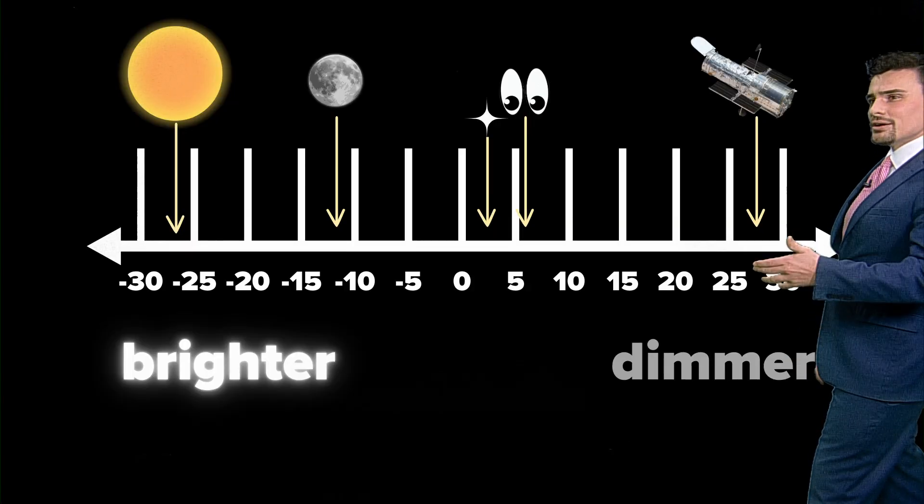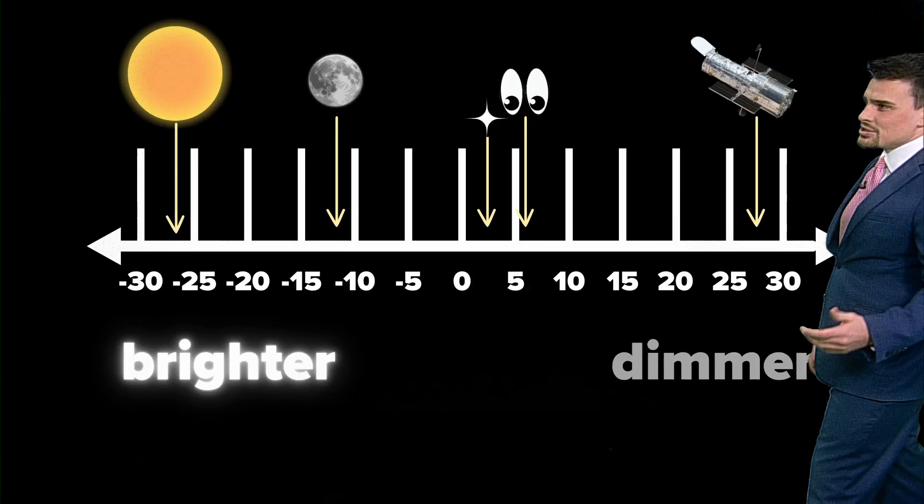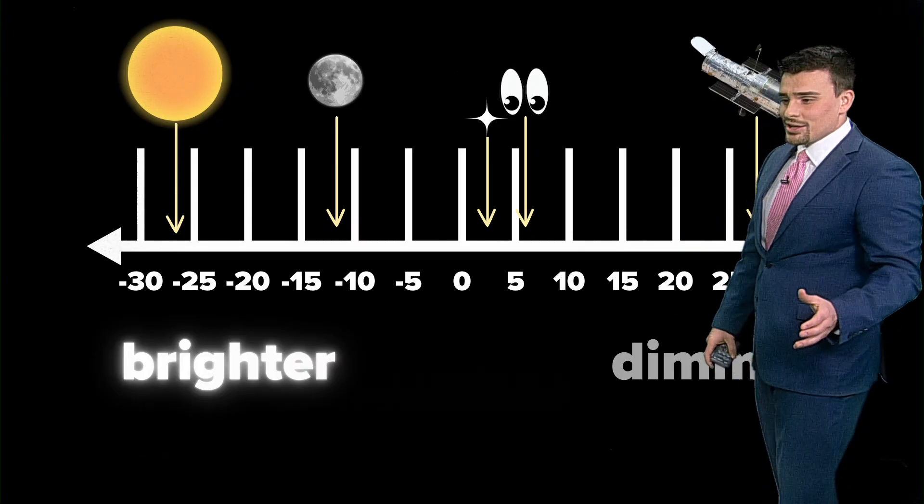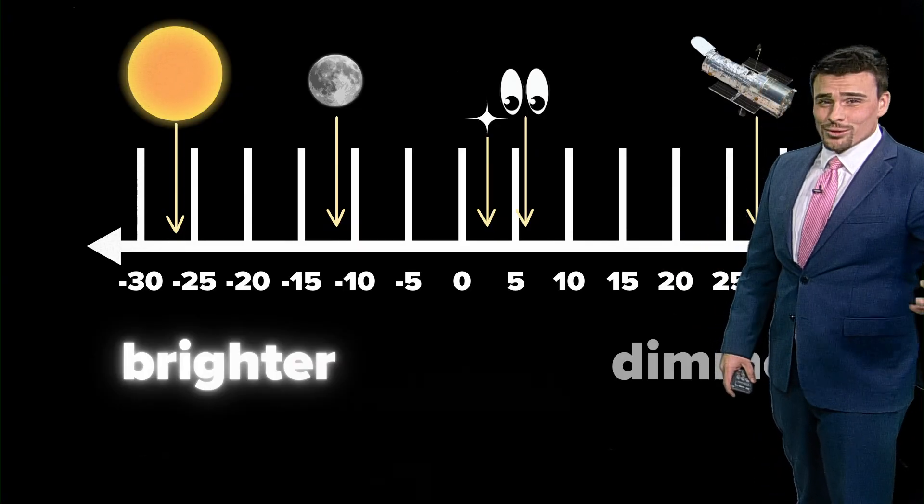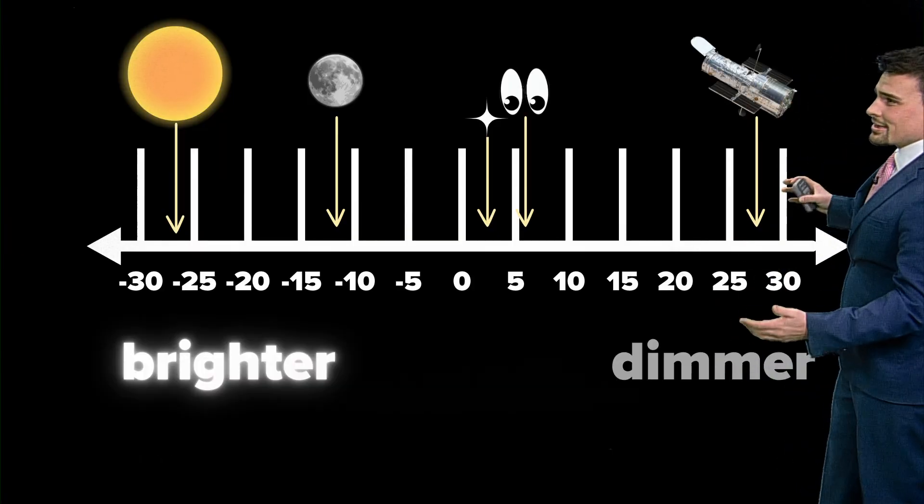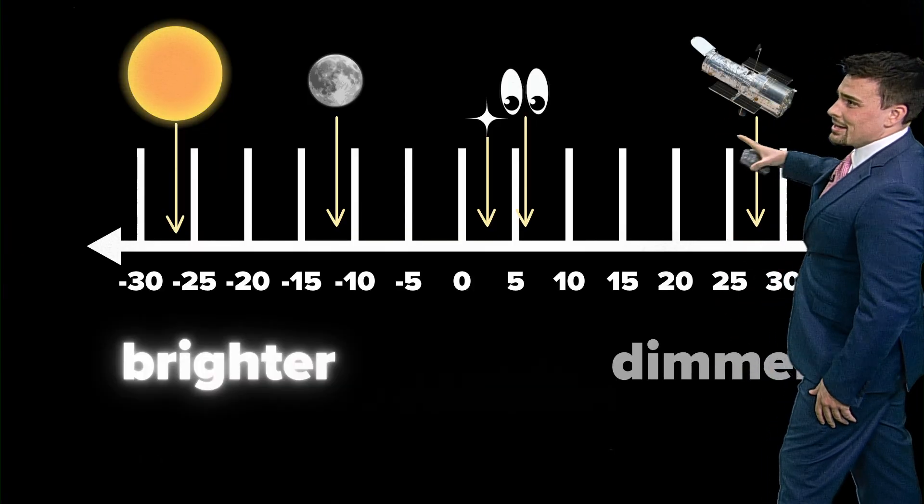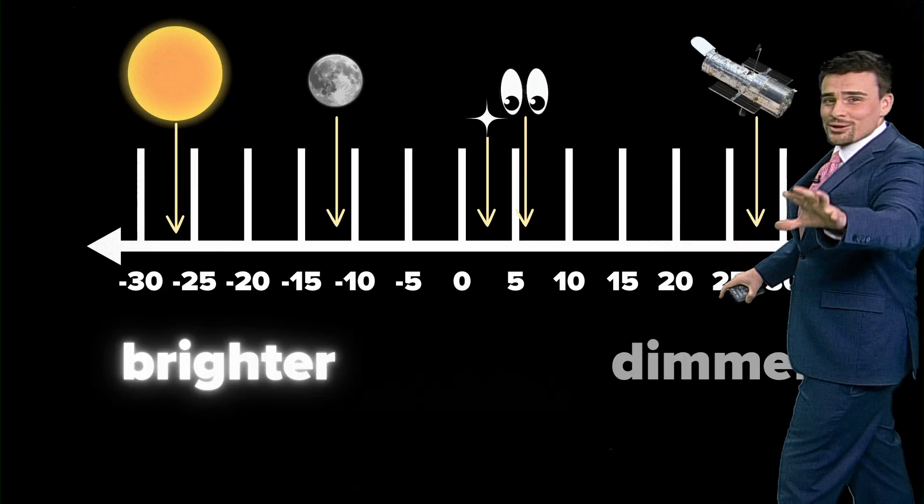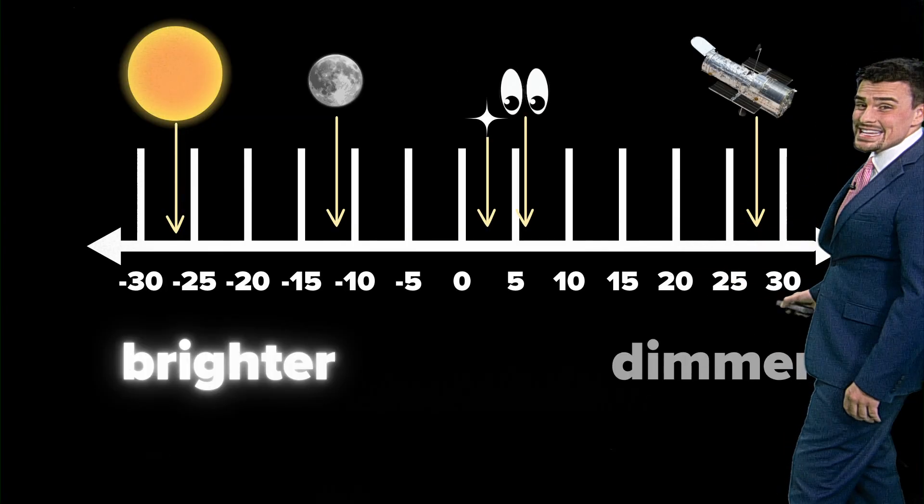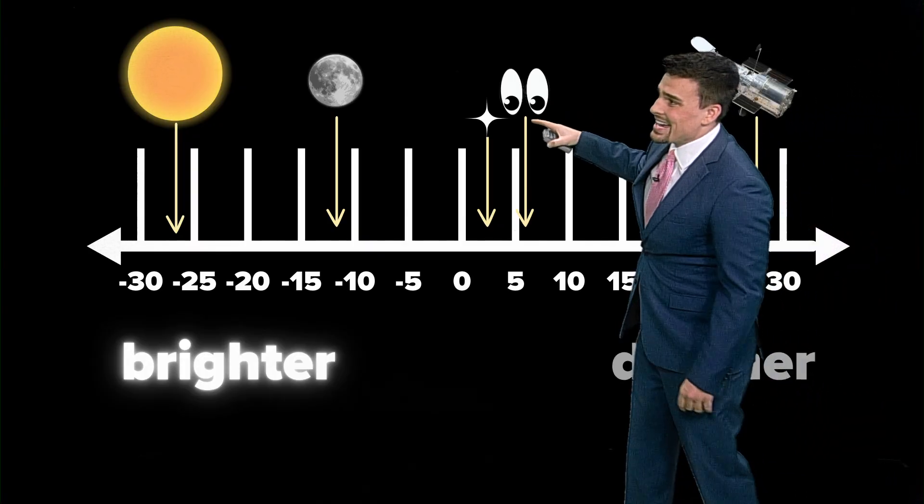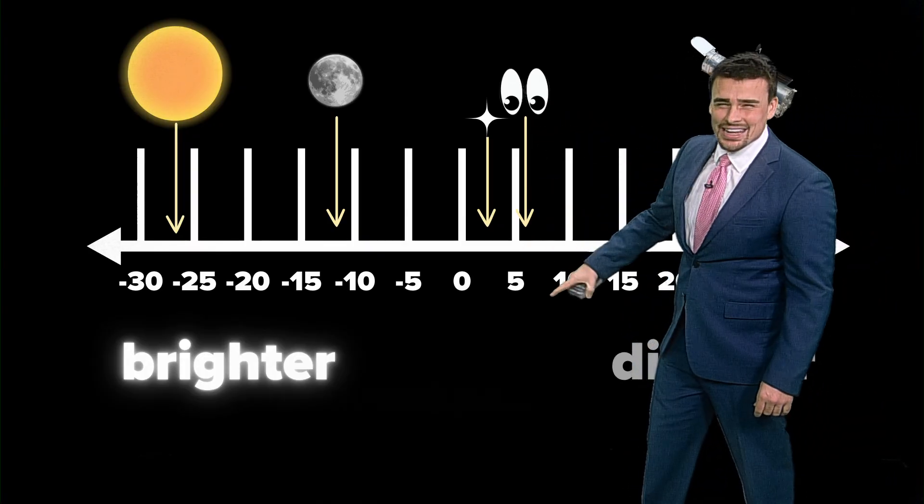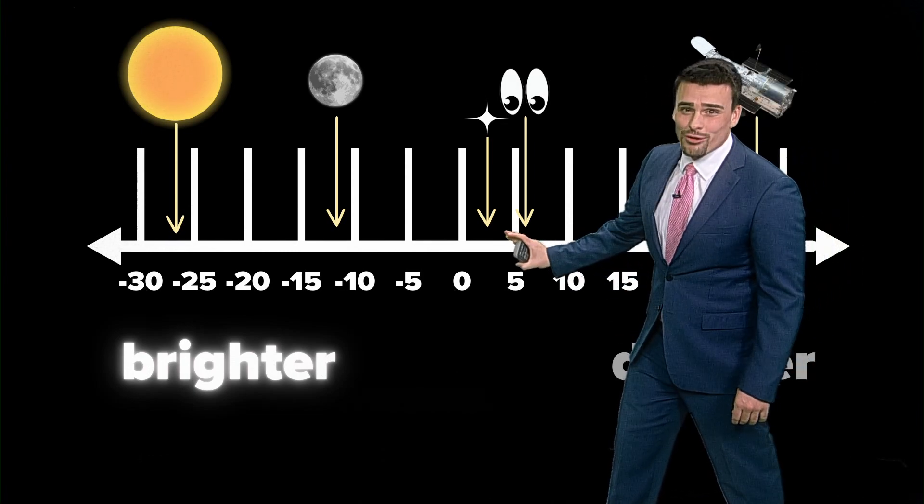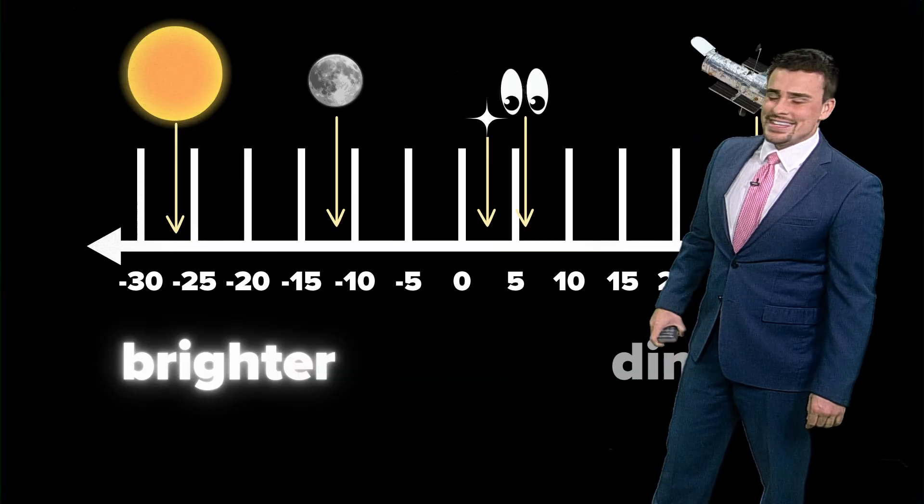So when it comes to how bright or dim something is, we use a magnitude. And for every magnitude, one change in magnitude could be 2.5 times brighter or dimmer. So when we're looking at things, this is the Hubble telescope. It can see things 25 or a little bit greater in terms of that magnitude. That's really, really dim. For our unaided eye, six is kind of that magic number. Now, for some folks, it may be more like four or five. You need to be a little bit brighter for you to see it.